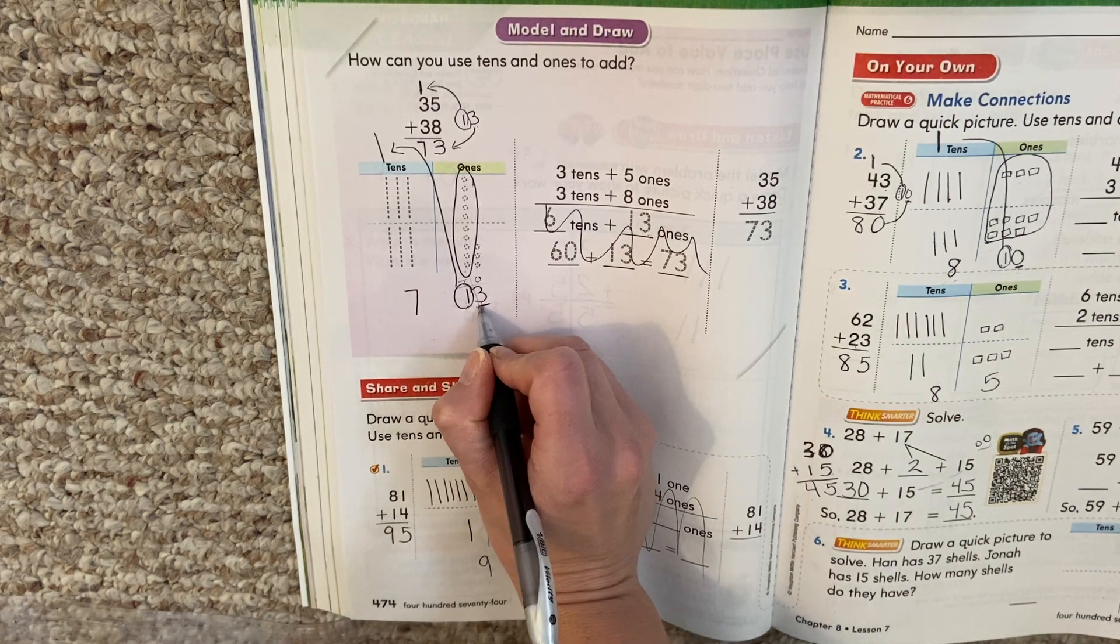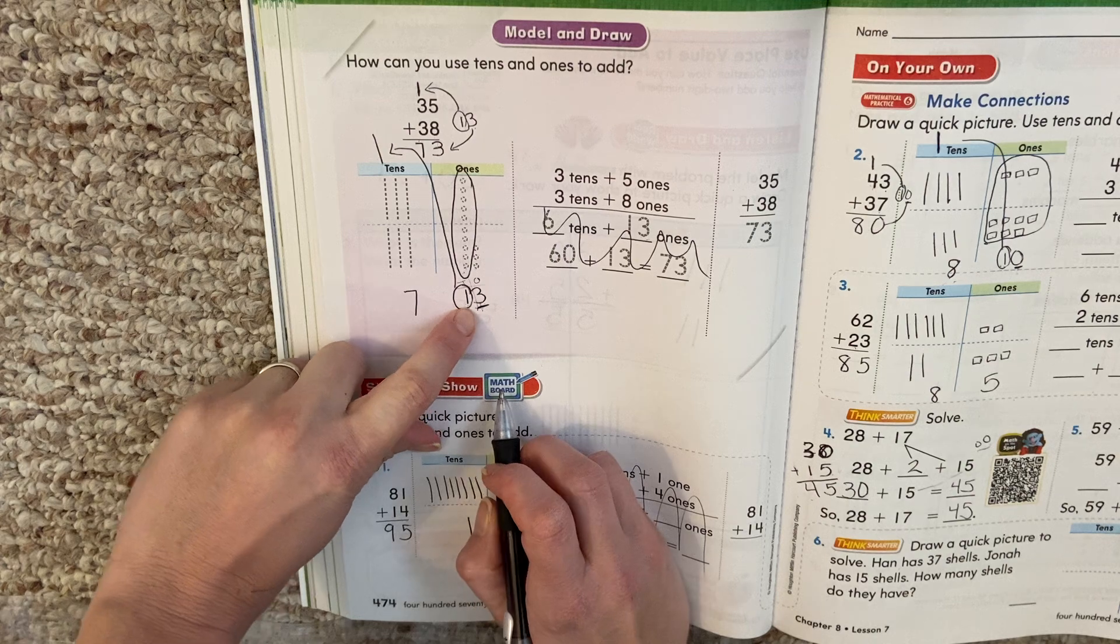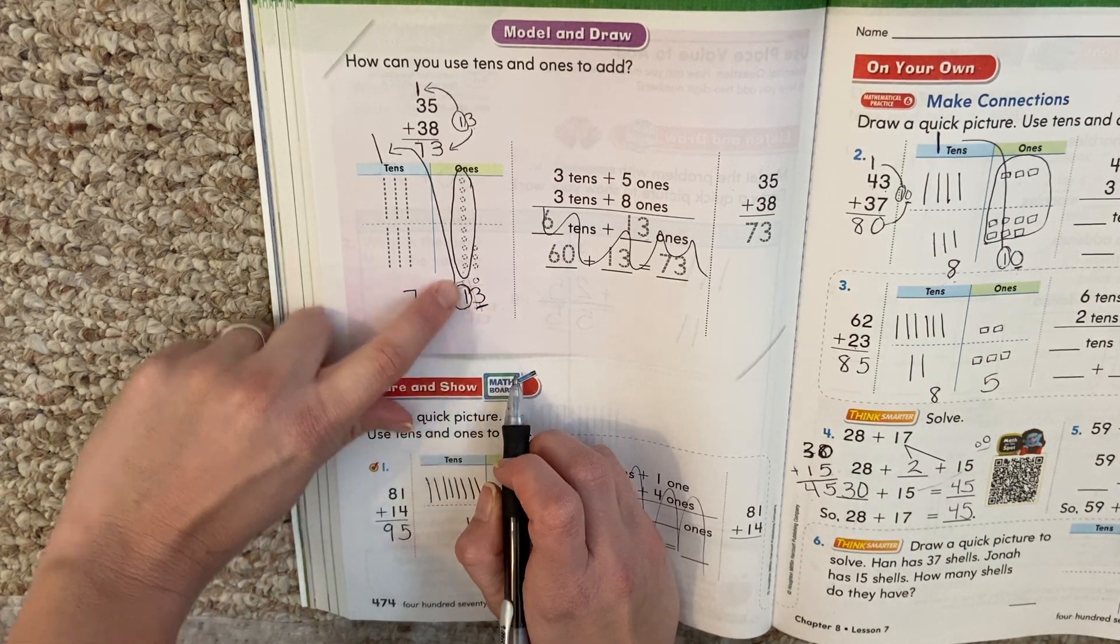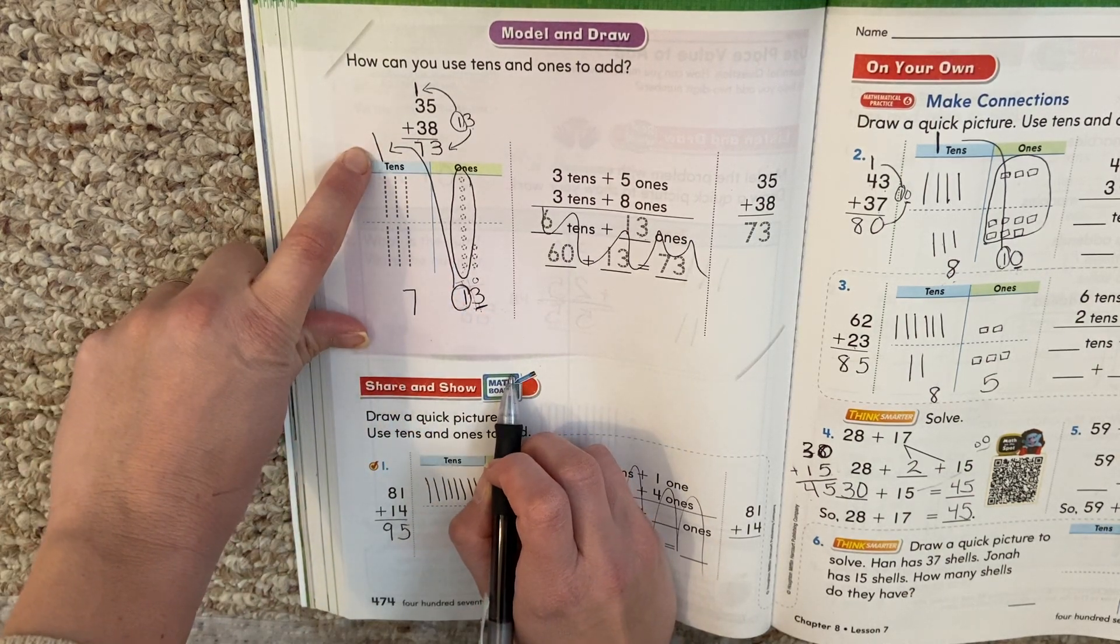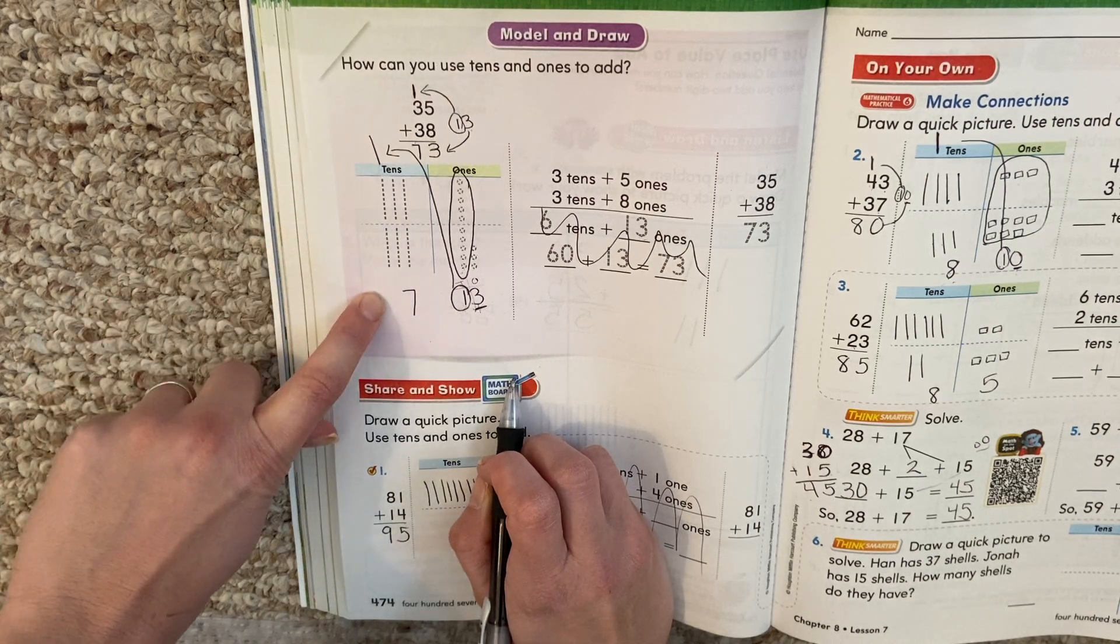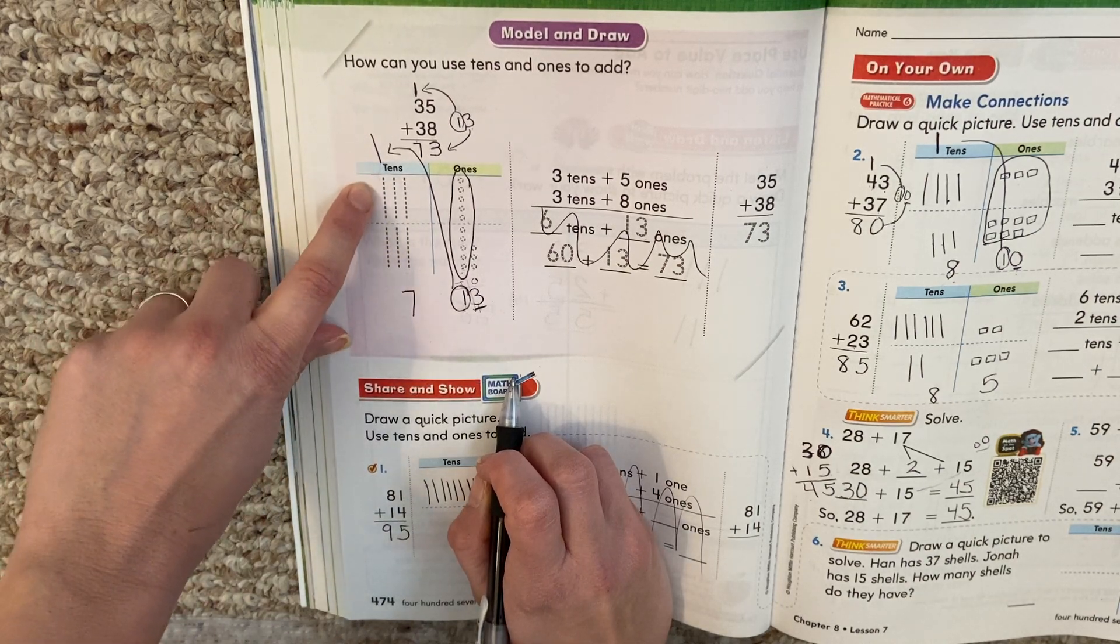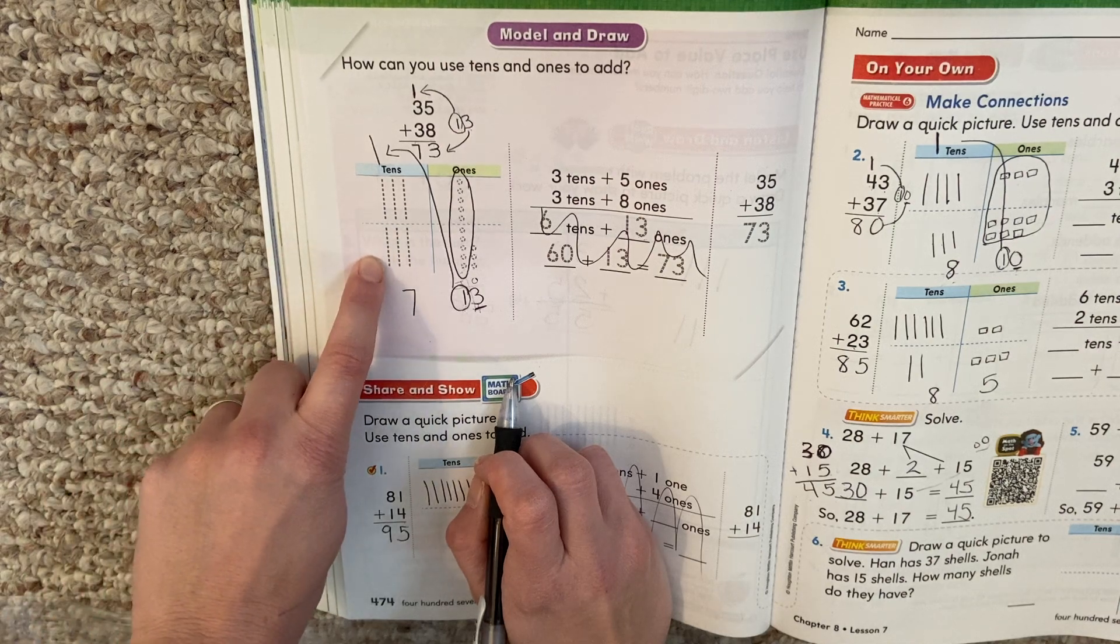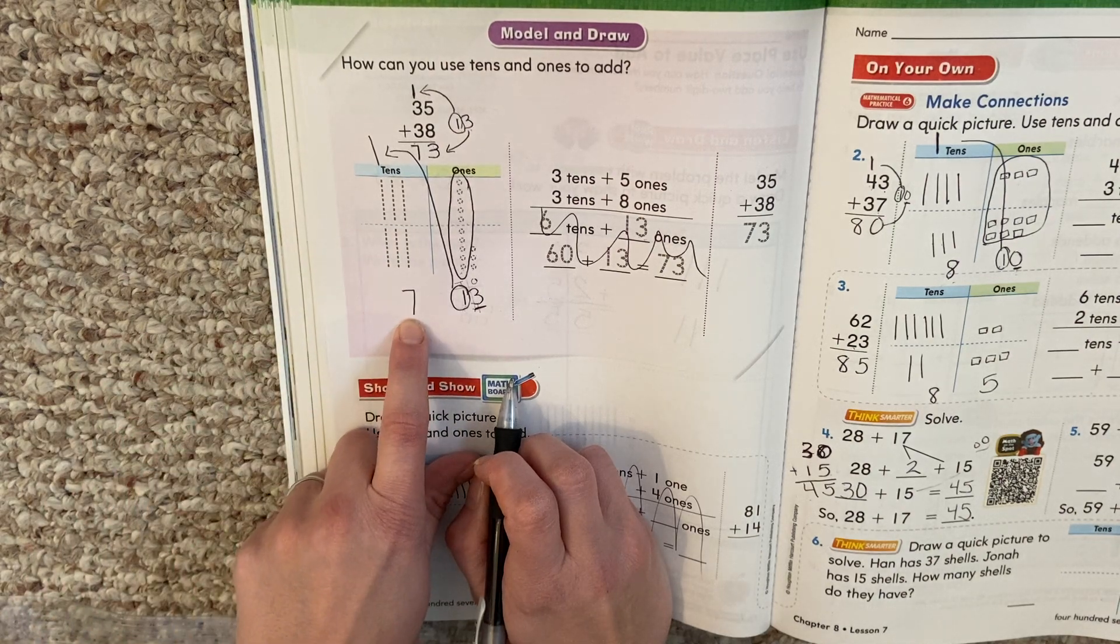So we keep the 3, and we move the 10 to the 10 side. And so then we add all the 10s. We said 1 plus 3 is 4, plus 3 more is 7. So our answer was 73.